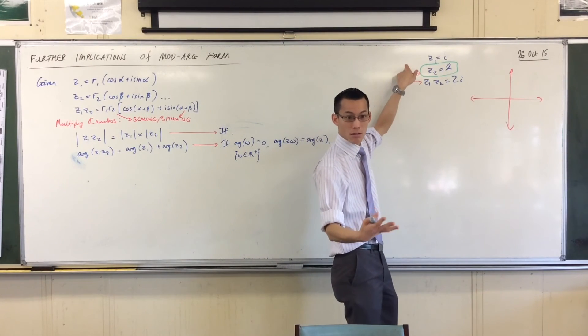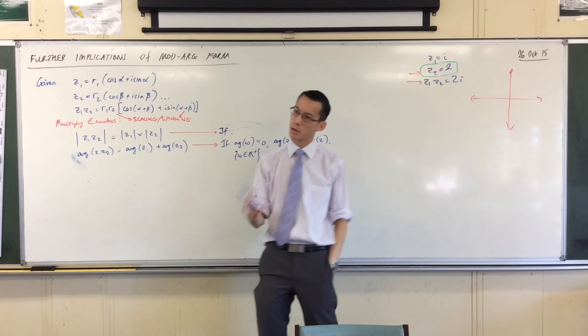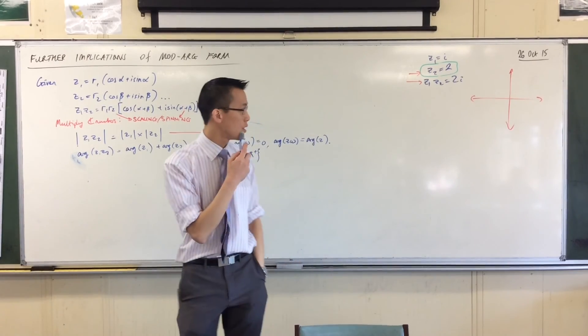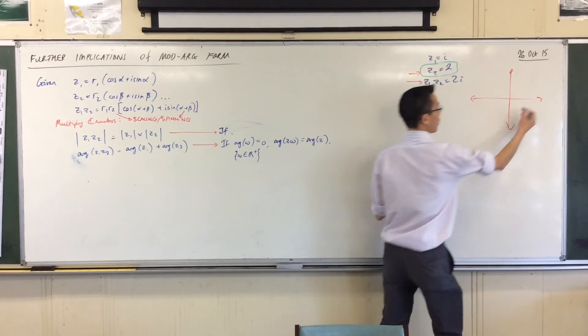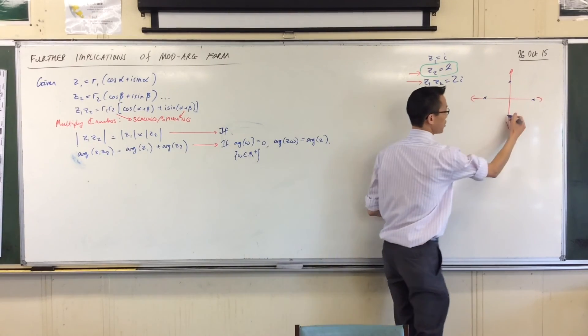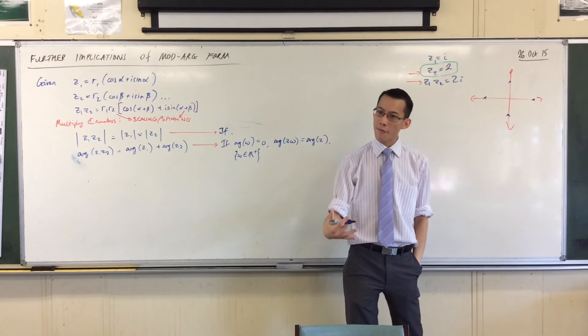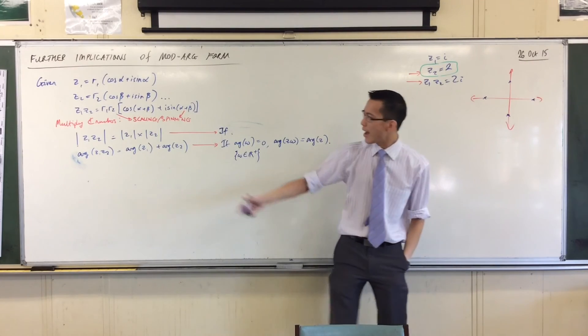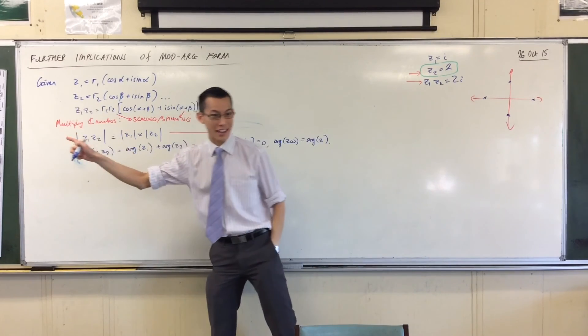Give me another one. Another number which I could multiply by and it wouldn't change the modulus. I've got one so far - i. And negative one. Come on, have a look. Give me another one. Negative i would do it.